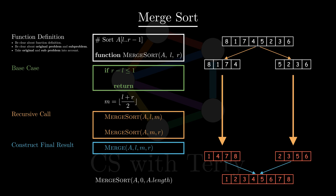In merge sort, the original problem is to sort the entire array, and the subproblem is to sort a subarray. Therefore, when defining the recursive function, we need to pass in the two indices L and R. This way, the function can be conveniently called by both the original and the subproblem. Next, we deal with the base case, which is the basis of recursion. In this step, the function hardcodes the correct answer when the data size is small enough, and returns directly. The next two operations are recursive call and constructing the final result. We call the recursive call a super operation, and the constructing final result a micro operation.